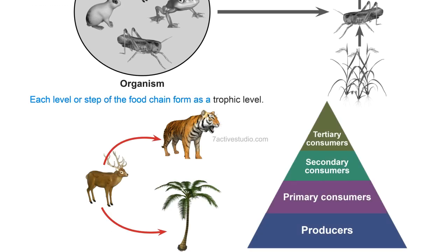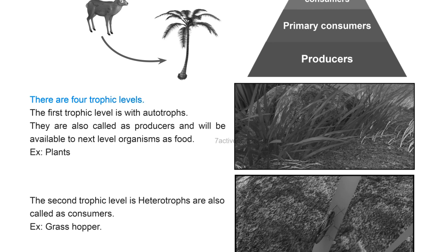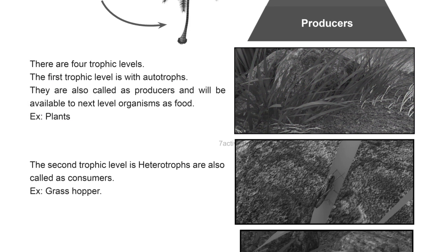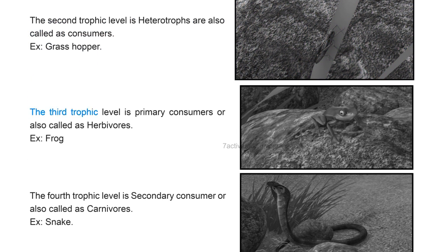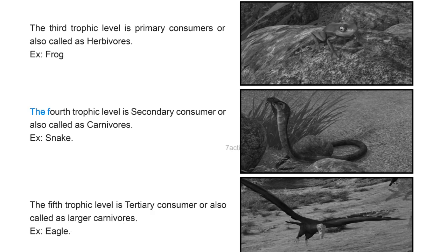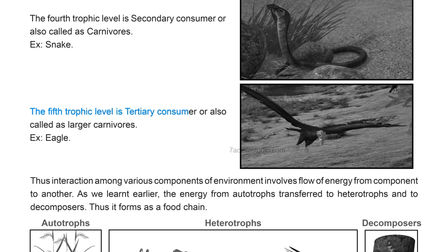Each level or step of the food chain is called a trophic level. There are four to five trophic levels. The first trophic level consists of autotrophs, also called producers — example: plants. The second trophic level consists of heterotrophs, also called primary consumers — example: grasshopper. The third trophic level is primary consumers or herbivores — example: frog. The fourth trophic level is secondary consumers or carnivores — example: snake. The fifth trophic level is tertiary consumers or larger carnivores — example: eagle.